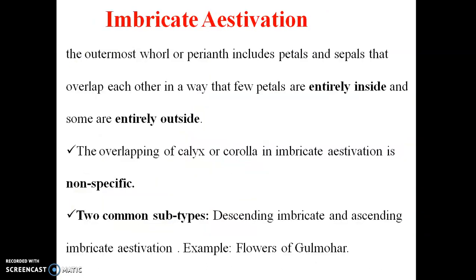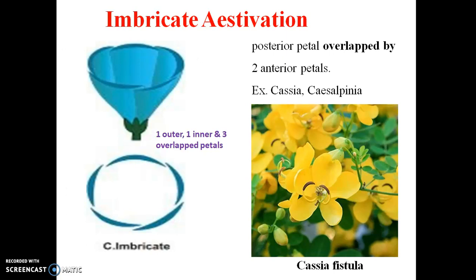The third type is Imbricate Estivation. In imbricate estivation, the outermost sepals or petals overlap with the others — some members are inside and some are outside in an irregular pattern. This overlapping is not uniform. We distinguish between Descending Imbricate and Ascending Imbricate. This type is characteristic of Caesalpinia and Cicillipine families.